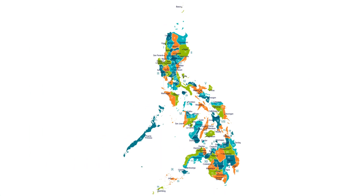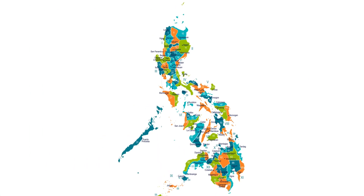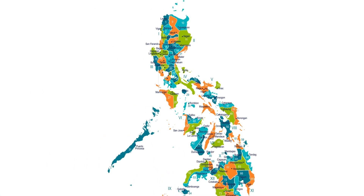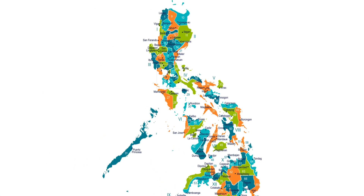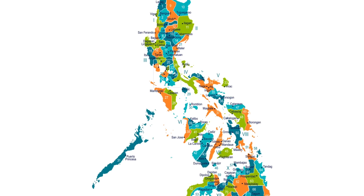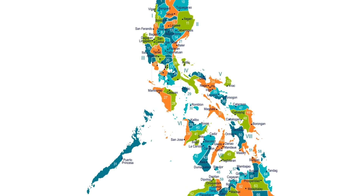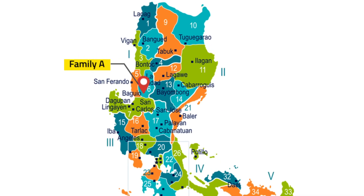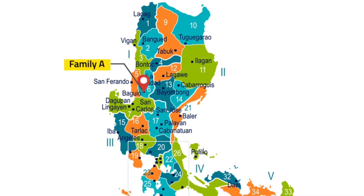Let's have an example. You are going to celebrate your birthday next month, and your relatives will come from different parts of the country. Family A from Baguio City will travel 160 miles in 4 hours.